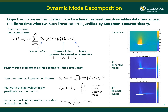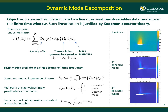Looking at the first equation, the left-hand side shows V(t,x), the spatiotemporal snapshot matrix. On the right-hand side there are three main terms: the first, phi_k, shows the spatial profile; the second, e to the power omega*t, shows the time evolution of the spatial profile; and the third, phi_k, shows the magnitude or relative contribution of the mode. Modes are sorted using the mean L2 norm, calculated using the b-tilde equation.